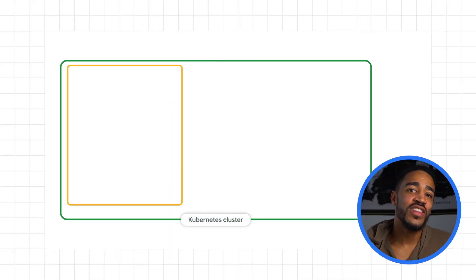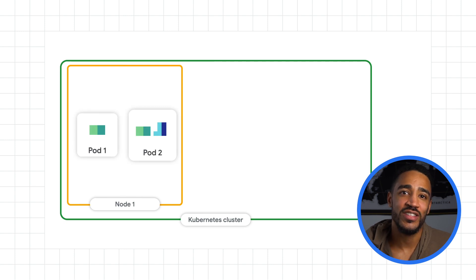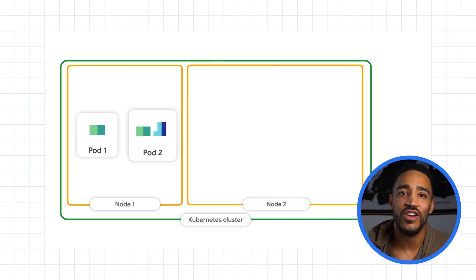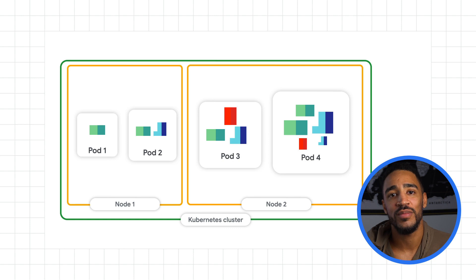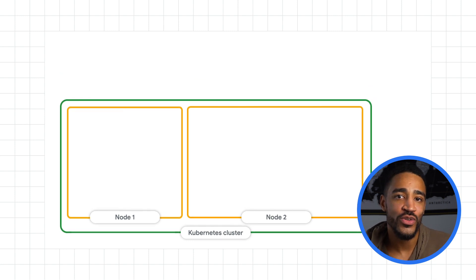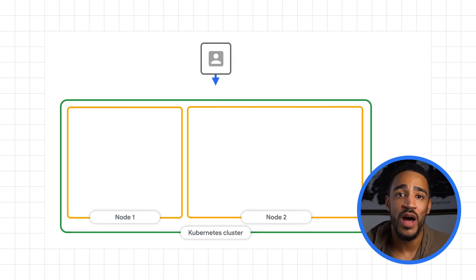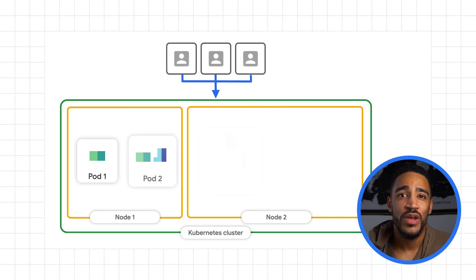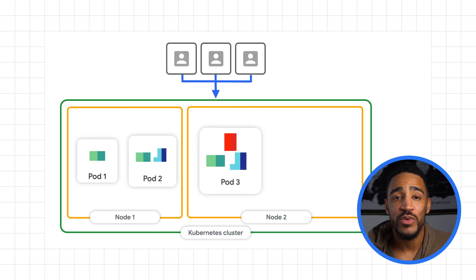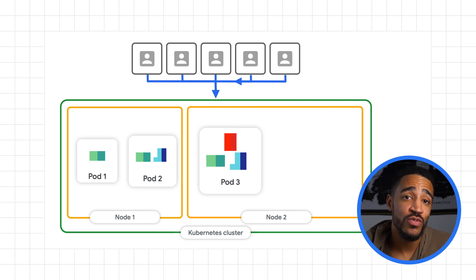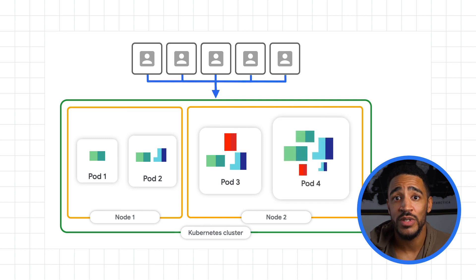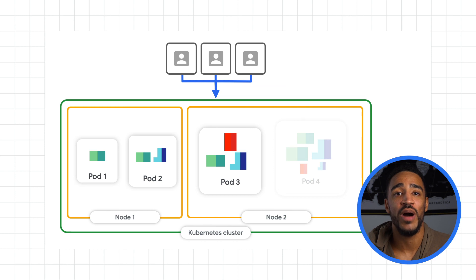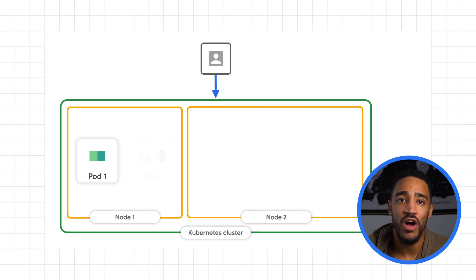In Kubernetes, you can think of a pod as an application instance. It has one or more containers that are coupled together and treated as one unit. The Horizontal Pod Autoscaler automatically adds or removes pods based on the usage rate of your application. So if a lot of people are currently using your app and its computational needs go up, it'll add pods for you. And if that usage rate has dropped, then the Autoscaler will automatically remove pods. This happens based on CPU and memory metrics by default, but it's also possible to use custom metrics.